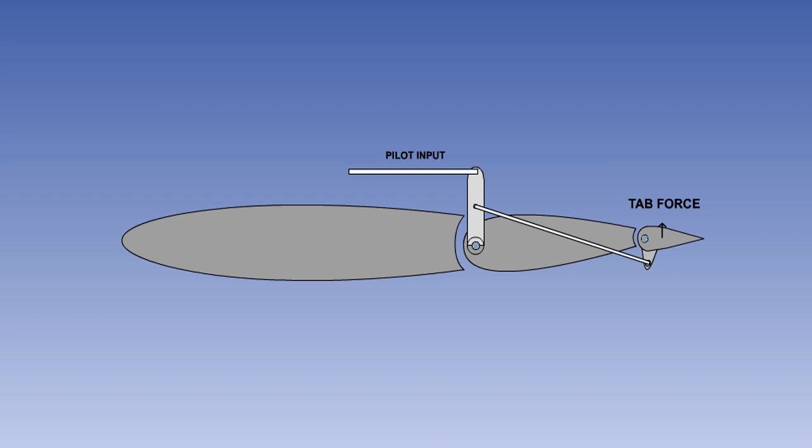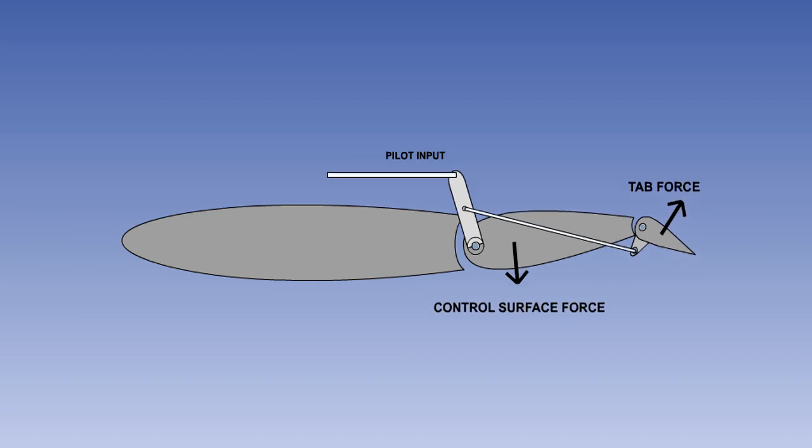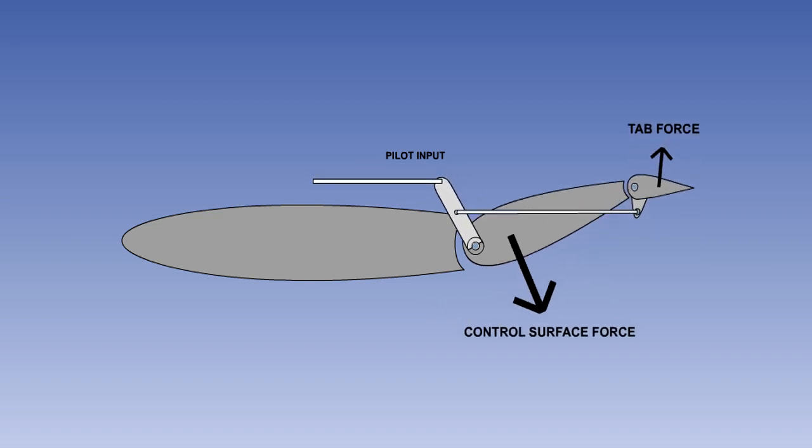The servo tab is used to assist the pilot in moving the control surface. It differs from the previous two tab controls, in that the pilot actually controls the tab and not the control surface. Movement of the tab generates an aerodynamic force which moves the main flying control. View the sequence of events in the graphic, which depicts an elevator with a servo tab attached.